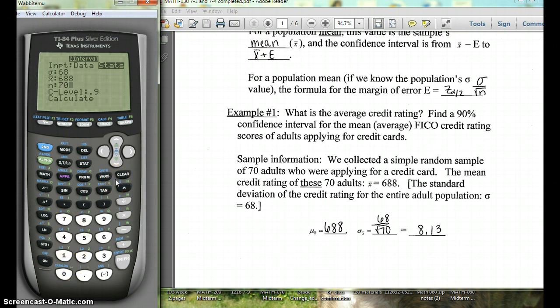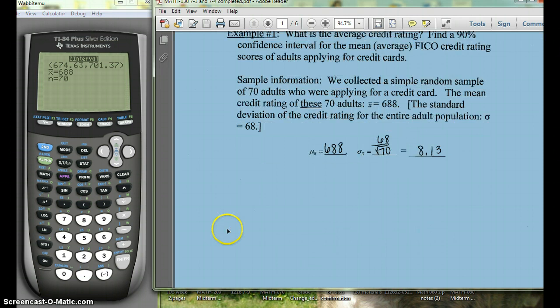And then it asks for our confidence level and we want to find a 90% so it's already at 0.9. So we'll hit calculate and it gives us our interval.